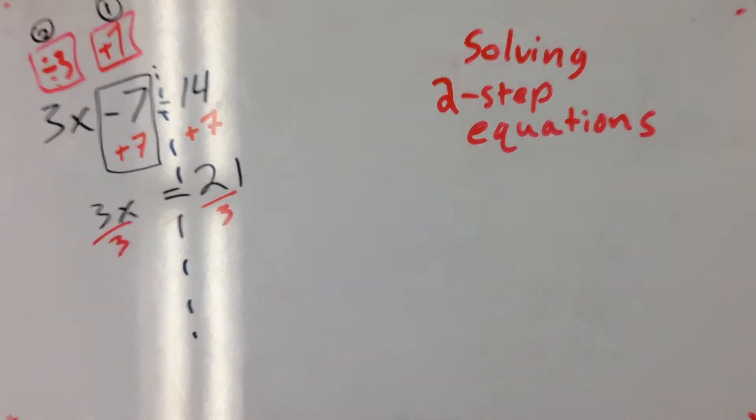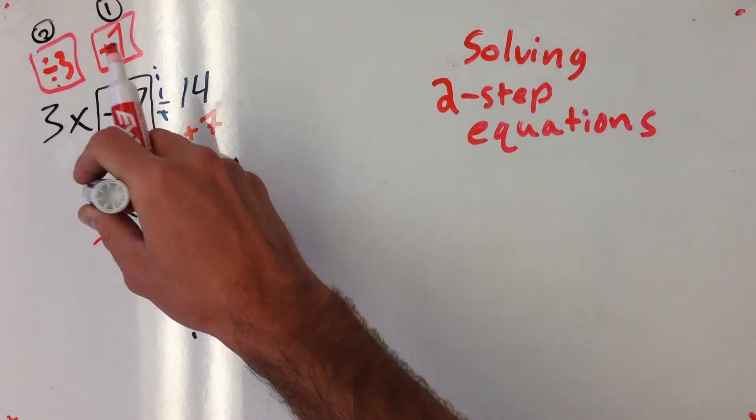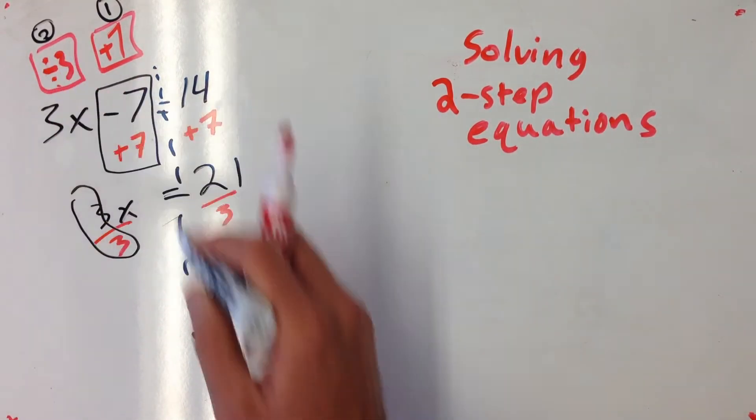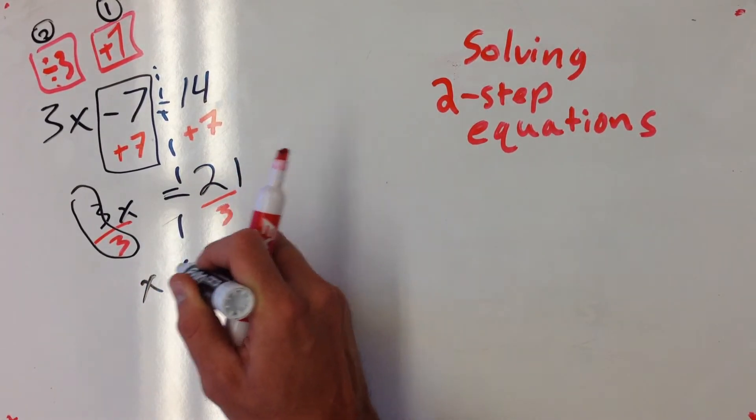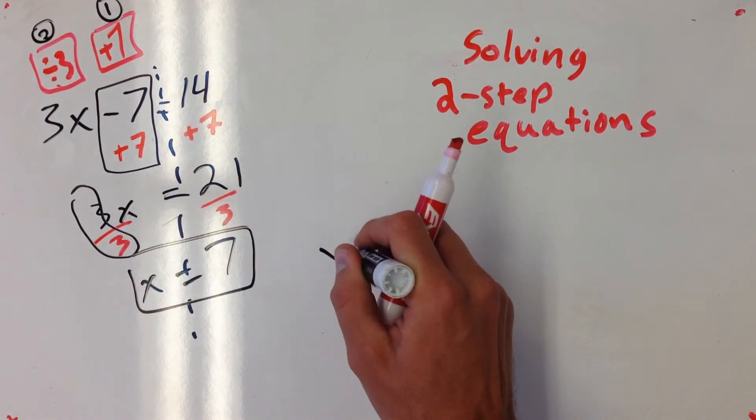I think more people choose to do it this way. So I divide both sides by 3. The reason we do that is, poof, that's gone, and we're left with x equals 7. And that's going to be our final answer, x equals 7.